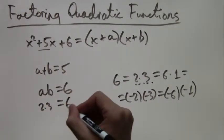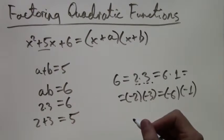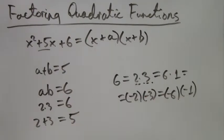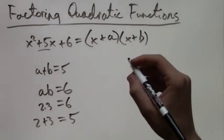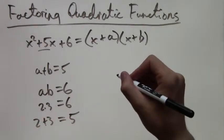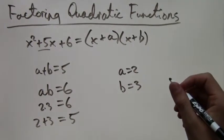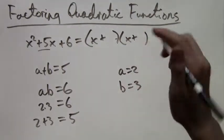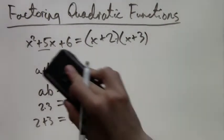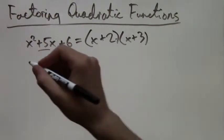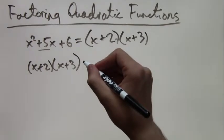And again, 2 times 3 is 6, 2 plus 3 is 5. So obviously those are the a and b that we want. So now that we know what our a and b's are, a equals 2, b equals 3, we can plug them back into the equation: x plus 2 times x plus 3. So now we can make sure by foiling out this expression and see if it equals what we started with.